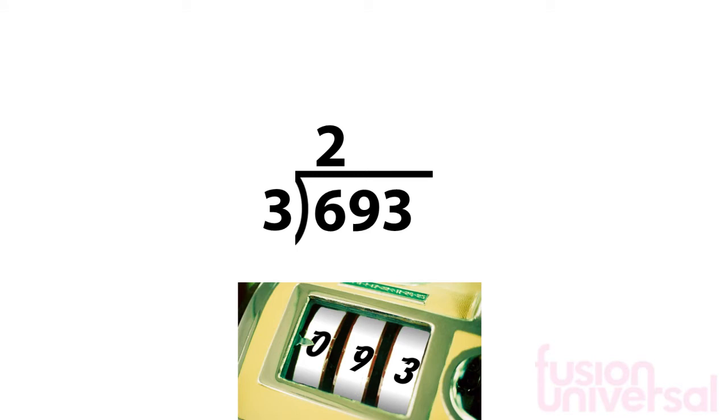Next we look at the 10's place value. We divide this 9 by 3. 3 goes into 9 three times. Again, this 3 goes directly above the 9.